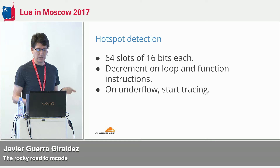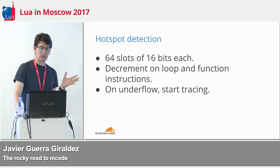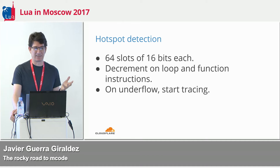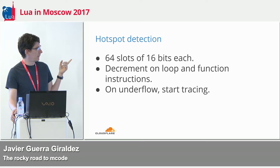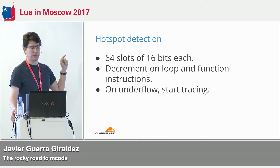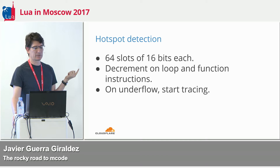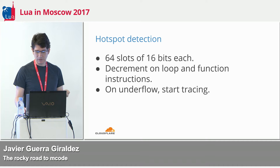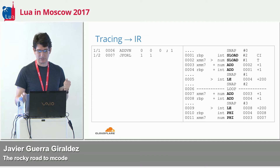How does it detect that it's a hot spot? There are 64 slots — just 64 — and it's not a hard limit, it's easy to change, but nobody has ever found a need for that. Each slot starts with a counter, starting at 108. When a loop or function bytecode instruction executes, on each execution in the interpreter, it decrements the corresponding slot for that instruction. When it underflows — goes down to zero — it detects 'this is a hot part, let's trace it.'